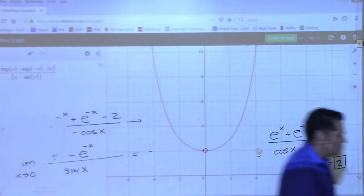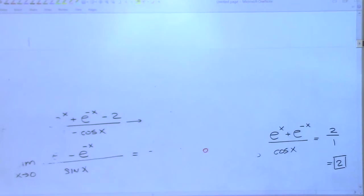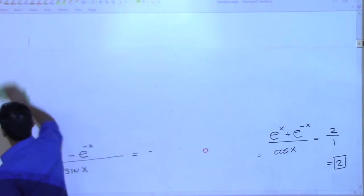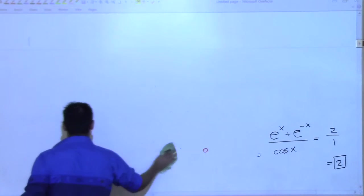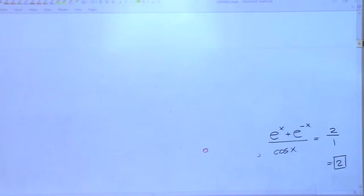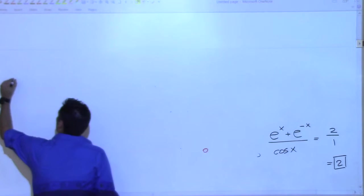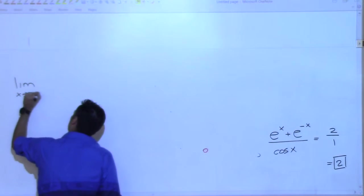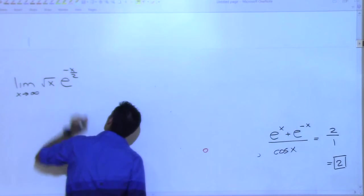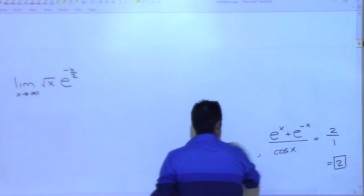Let's do number twenty-four: the limit as x goes to infinity of root x times e to the negative x over two. That's infinity, I believe? X is going to infinity. Root x times e to the negative x over two. This problem is a little bit tricky.